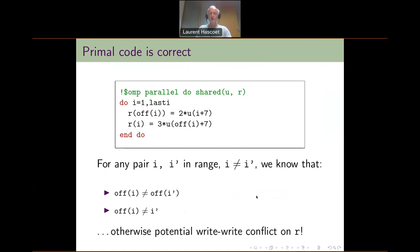We assume the primal code is correct. This is a simple loop from the primal code, and since it is correct, we know that this write of R cannot conflict with another write of R on two different iterations. In other words, for any pair of indices i and i-prime in the loop range with i different from i-prime, we know that the index expression of(i) is always different from of(i-prime). Similarly, of(i) is also always different from i-prime itself, because of possible conflicts between those accesses.